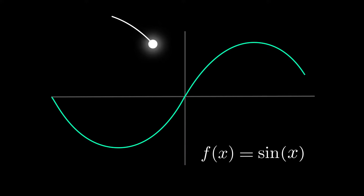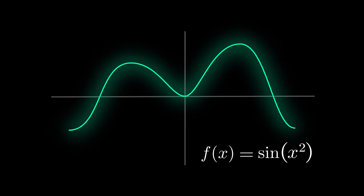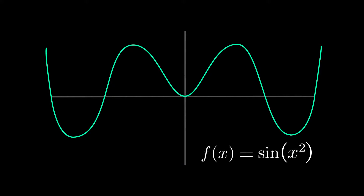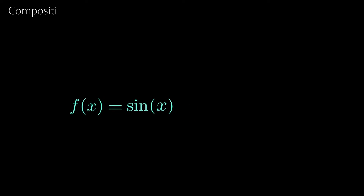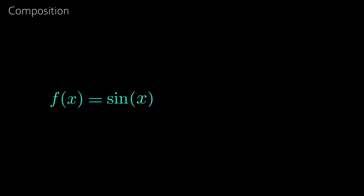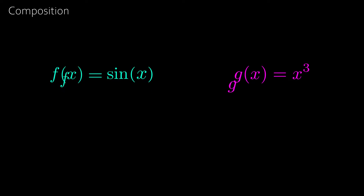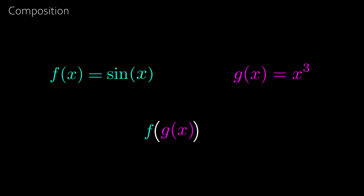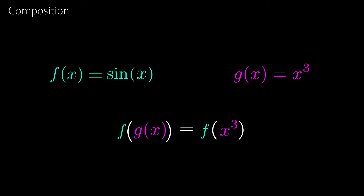The chain rule is differentiation's ultimate tool for finding derivatives of the composition of two or more functions. But what do we mean by composition? Take f of x equal to sin x, and g of x equal to x cubed. Then we say that f composed with g is f of g of x, which in this case is equal to f of x cubed, which is sin x cubed.